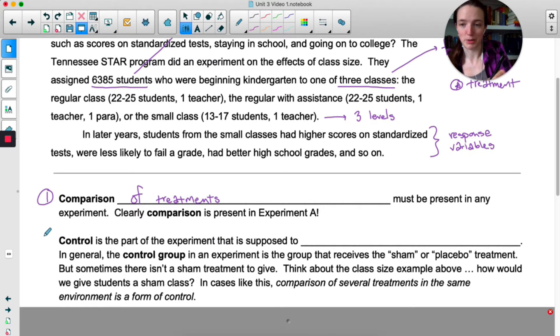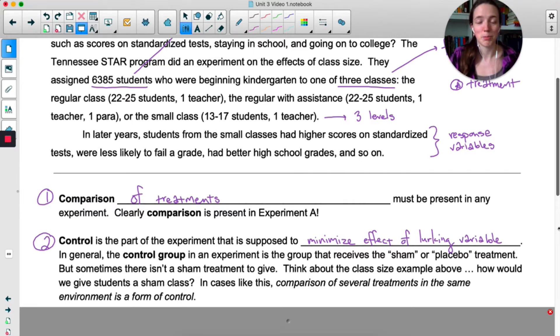The second principle of experimental design is control. The reason we need control is to minimize the effect of a lurking variable. Usually the way this is done is with a control group in which one of the treatments is a placebo, which is basically a sham treatment or a fake treatment. The common example of a placebo is in a medical example. Let's say we have a new medication for headaches. The people in the control group would get a placebo pill, which might be like a sugar pill that doesn't actually do anything for their headaches. But it's important that we have that placebo group so we can compare them to the people who got the new medication. They're kind of like our baseline or our normal group that we can compare to. The reason they have to take a placebo pill instead of just doing nothing is they have to feel like they are also getting a treatment. The people getting the placebo don't know that it's not real.